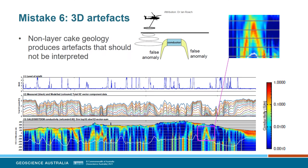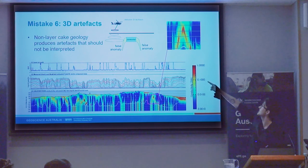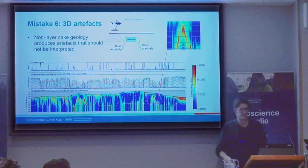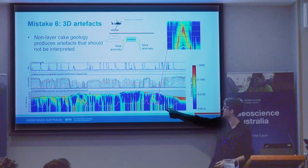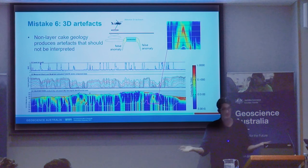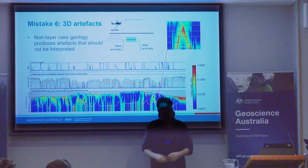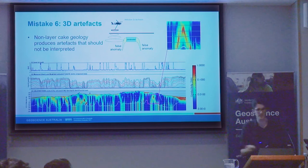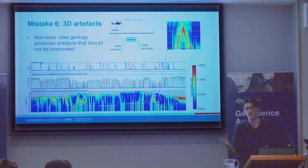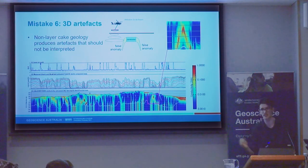AEM inversions like the ones presented today assume lateral continuity of all layers. As your aircraft moves towards a discontinuous conductor, it will start picking up the signal before it's over it, and will often create these pant-leg or Mexican-moustache type features. A lot of interpreters are familiar with this geometry and don't trust it. But there are subtler features too — people will call something an antiform or a fault, adding structural complexity not justified by the data, when what they're actually interpreting is a 3D artefact.